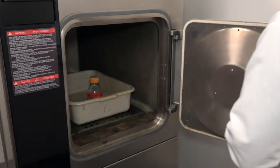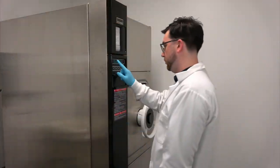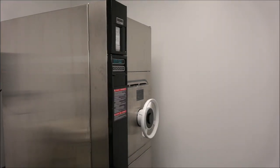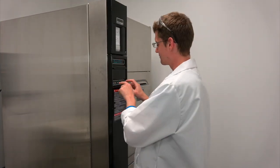To begin, we place our LB agar colloid in the autoclave and seal the door. We then set the autoclave to reach 121 degrees Celsius under 20 psi for 20 minutes and start the autoclave cycle. Do not use the autoclaves if you have not been properly trained.